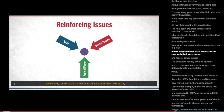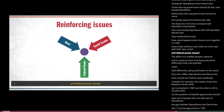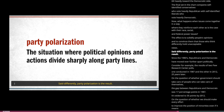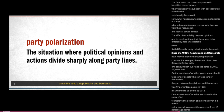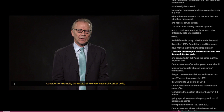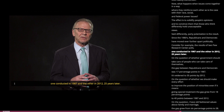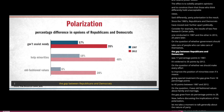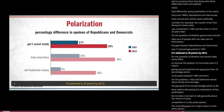When issues come together in a way that reinforces each other — as is the case with race, social, and federal power issues — the effect is to solidify people's opinions and convince them that those who think differently hold unacceptable views. Said differently, party polarization is the result. Since the 1980s, Republicans and Democrats have moved ever further apart politically. On the question of whether government should take care of people who can't take care of themselves, the gap between Republicans and Democrats was 17 percentage points in 1987 and widened to 35 points by 2012.